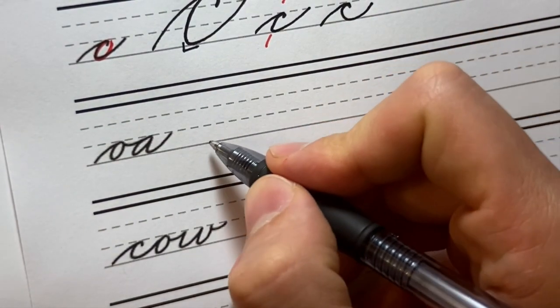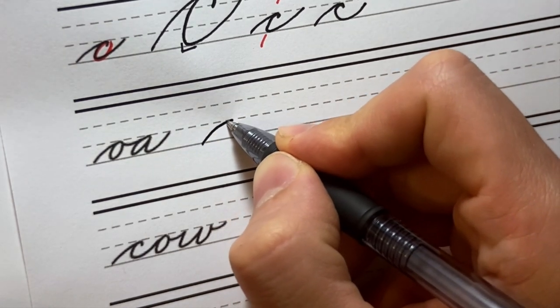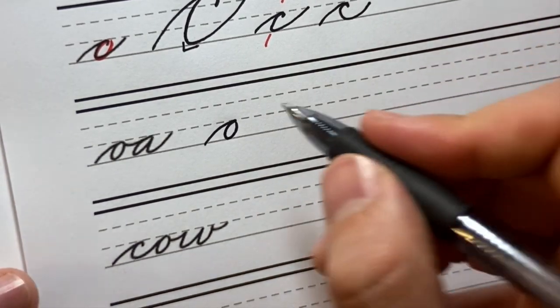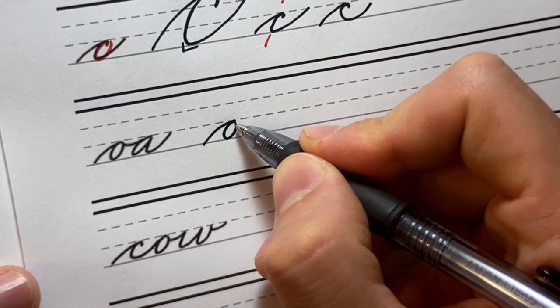So first we'll do our OA, our entry stroke, overturn, make our O. Then we'll see this connection again, which we saw with the W connecting from the top into our A.